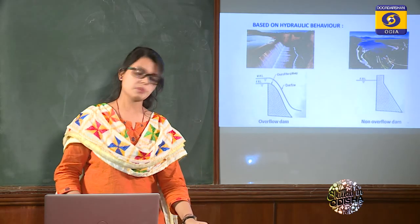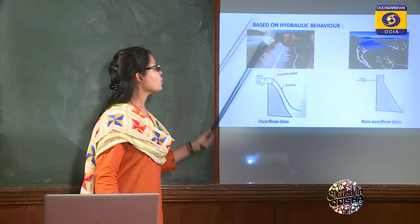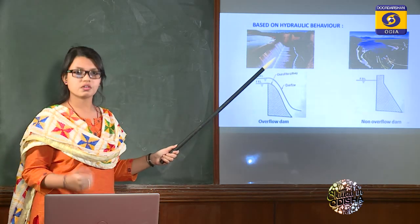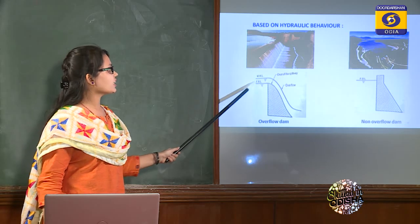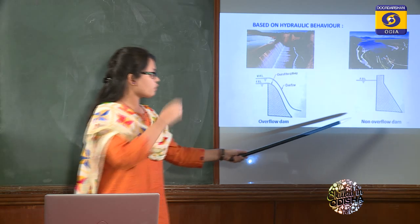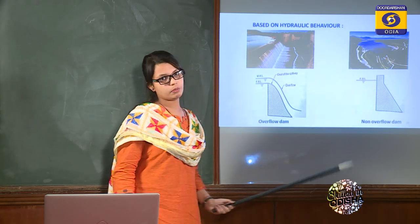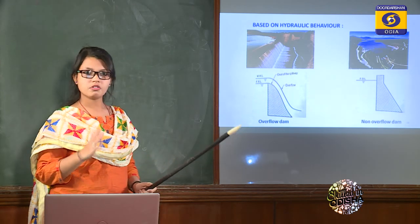Based upon hydraulic behavior, there are two types: overflow and non-overflow. Hydraulic means related to water — how water flows over the dam. If water flows over the crest, which is the top part of the dam, it is called an overflow dam, with a weir as an example. In a non-overflow dam, water does not flow over the crest; instead, excess water is led to the downstream side by spillways.